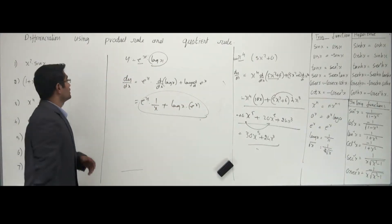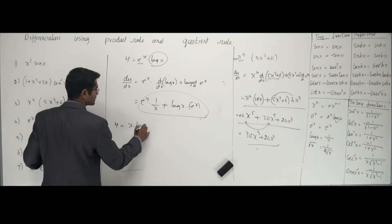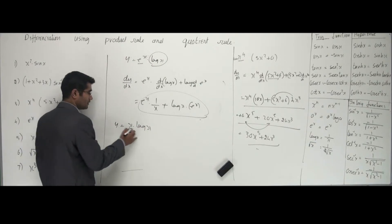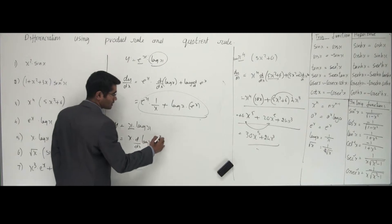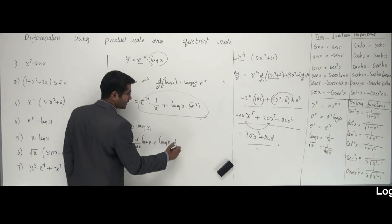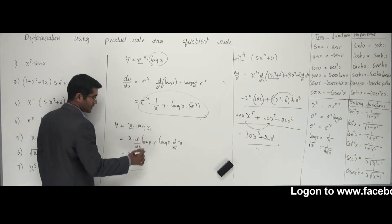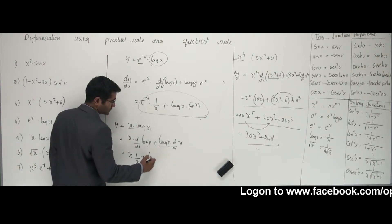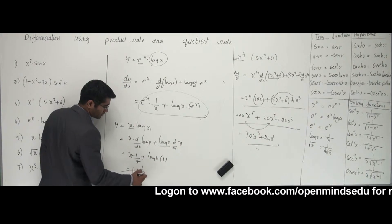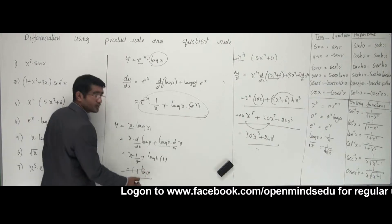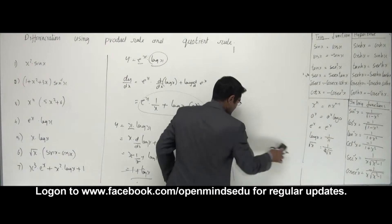The fifth question: y = x · log(x). So dy/dx = x · d/dx[log(x)] + log(x) · d/dx[x]. That gives x · (1/x) + log(x) · 1, which simplifies to 1 + log(x). Your answer is 1 + log(x). Very simple. I hope you're getting this — I still suggest you stop the video and work the problems yourself.